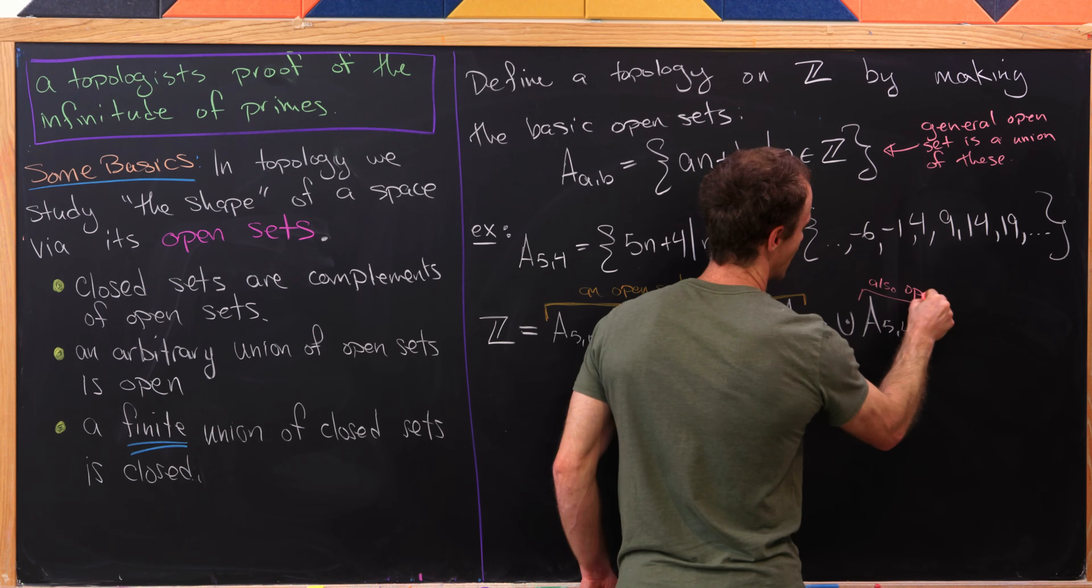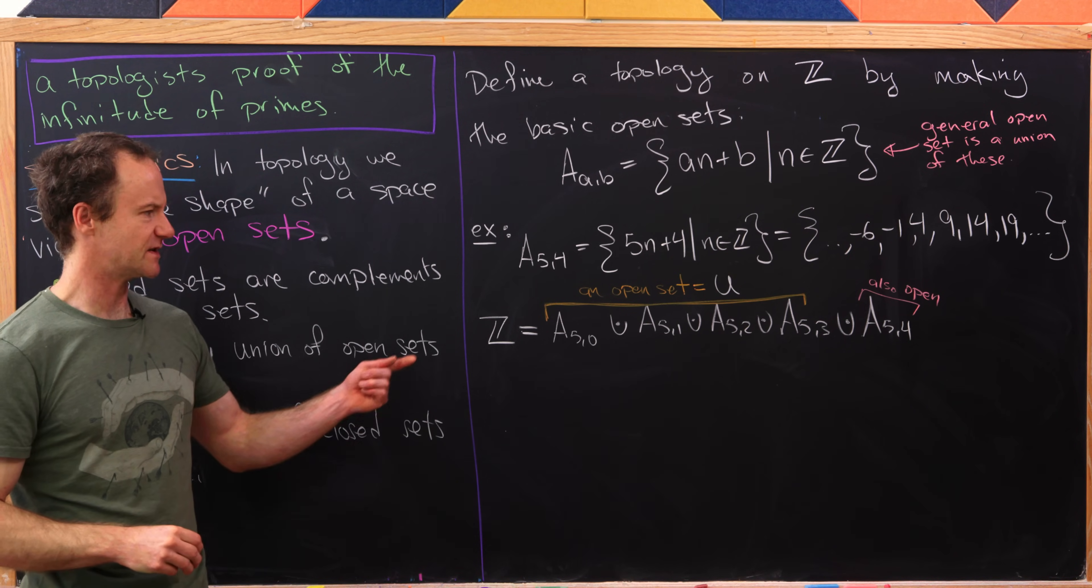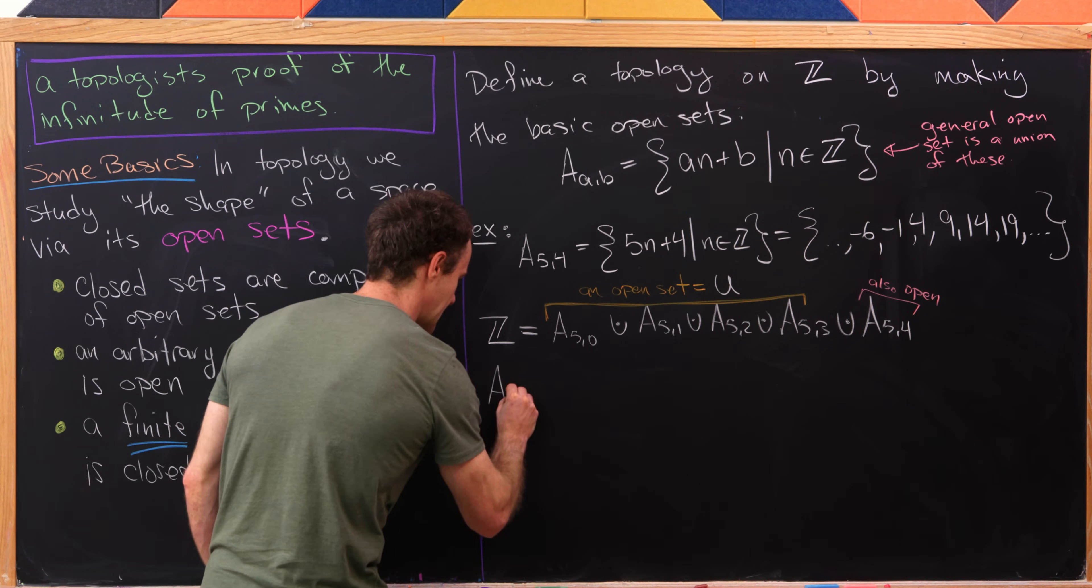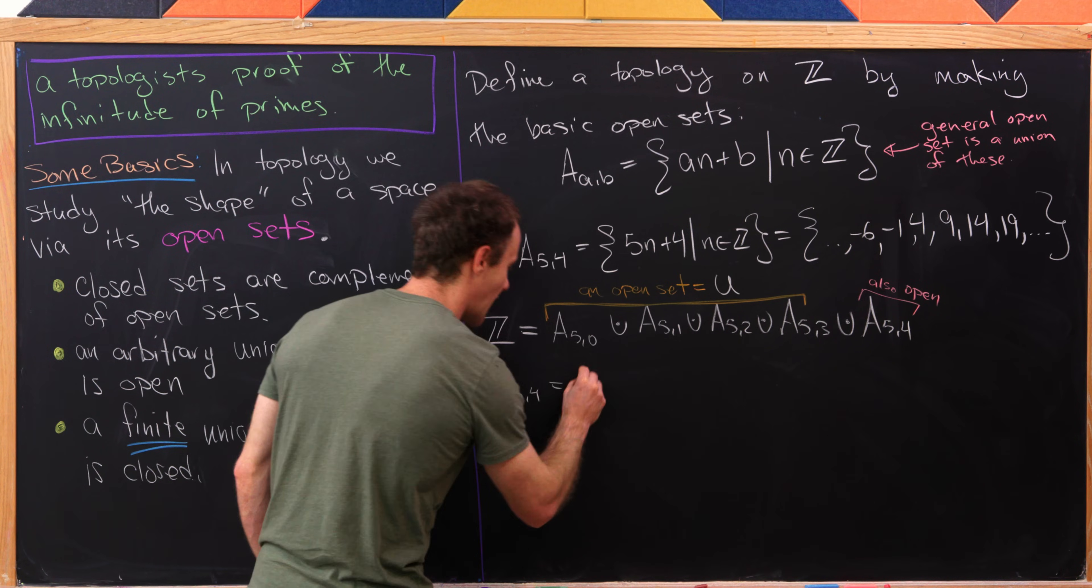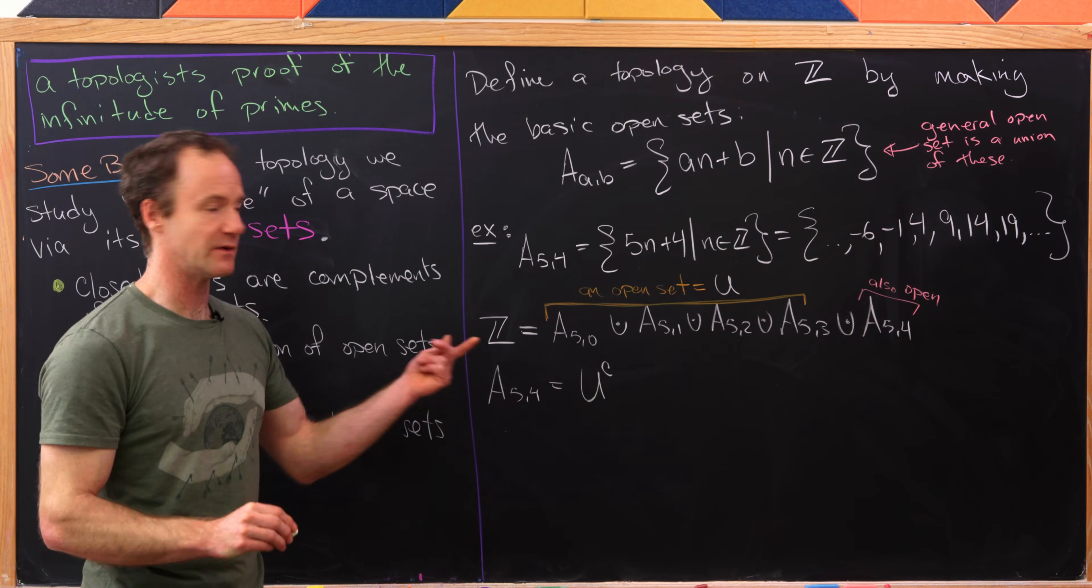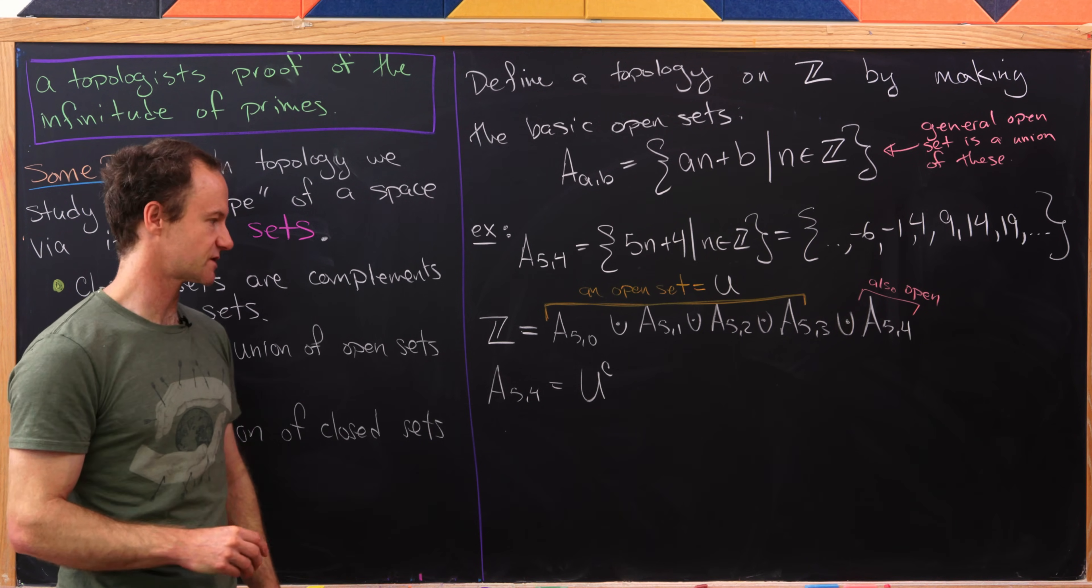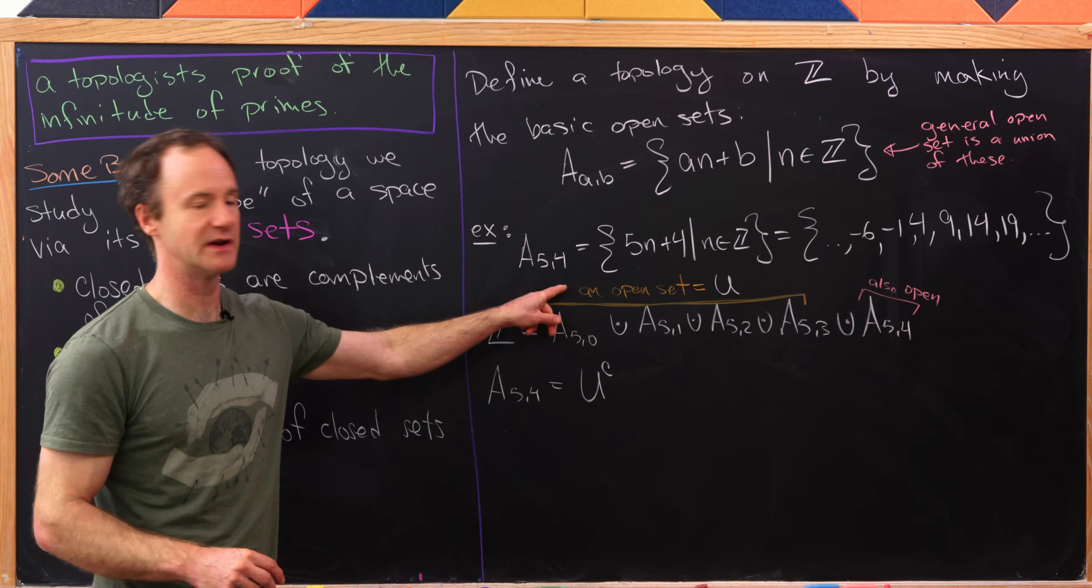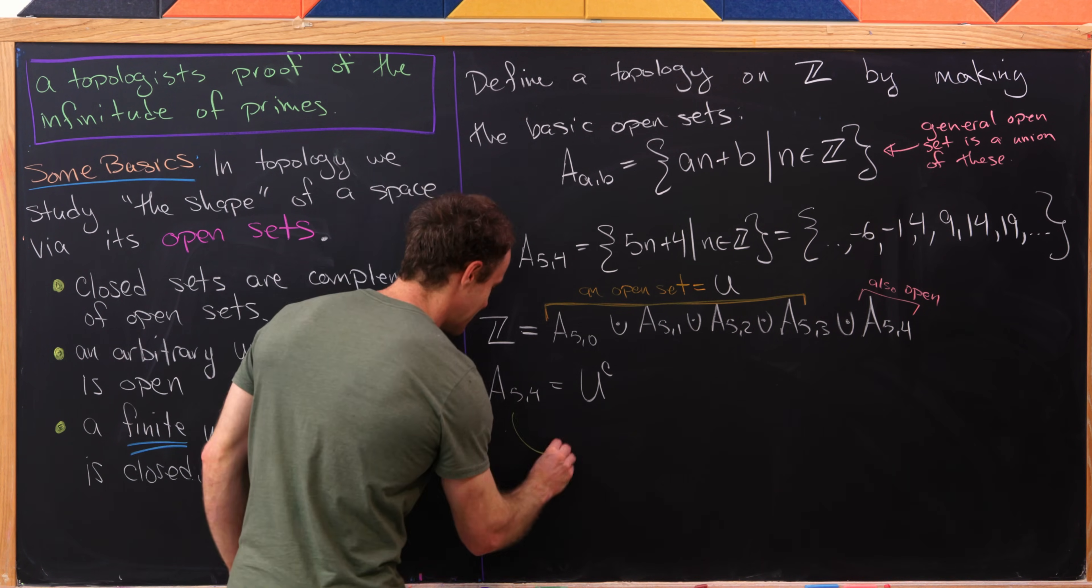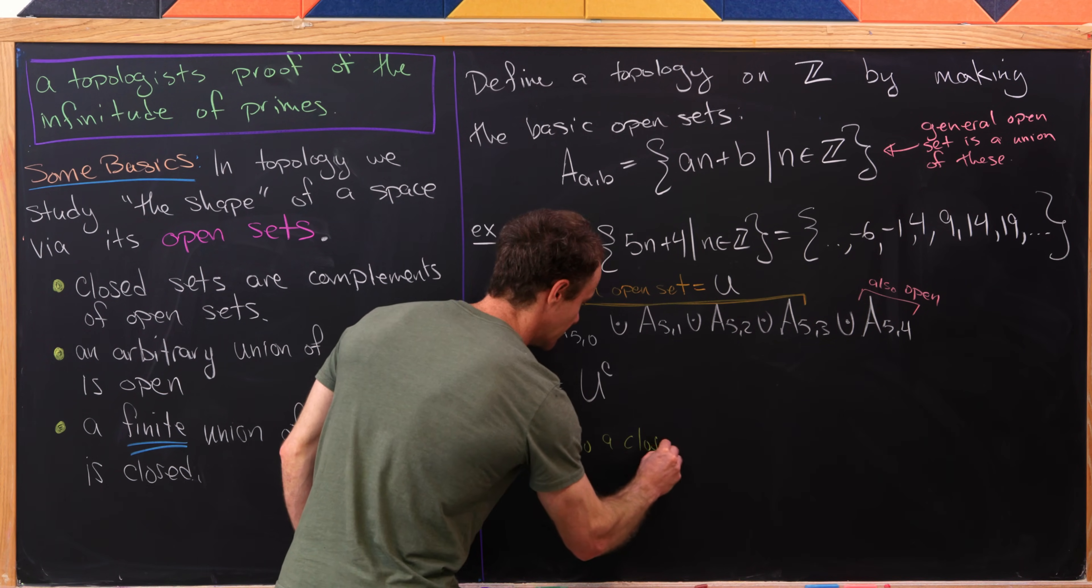But then let's notice that this thing is also open. Well, that's pretty clear. That's actually one of our basic open sets. Okay, but since we've got a disjoint union there, we can write A54 is equal to the complement of U. Well, that's exactly what we mean by having a disjoint union when our whole universe is the integers. Oh, but if I've got the complement of U, which is an open set, that means indeed this thing is also a closed set.